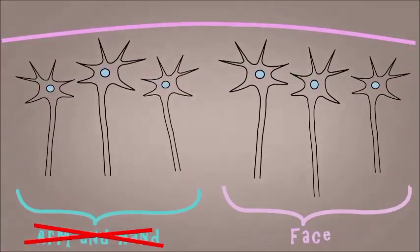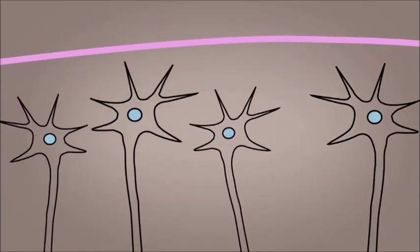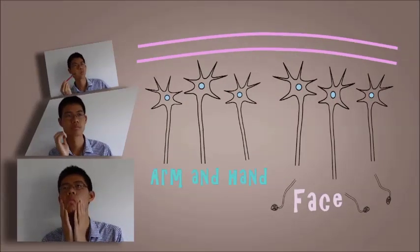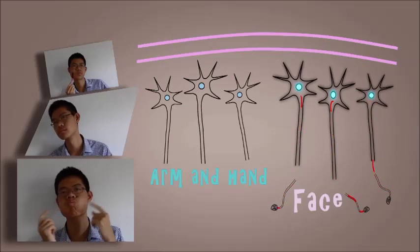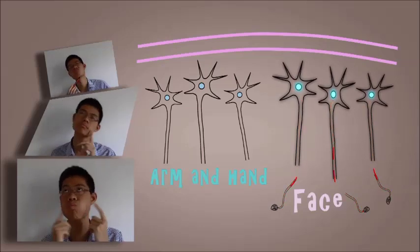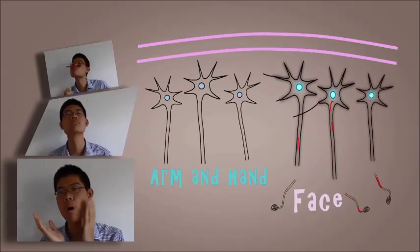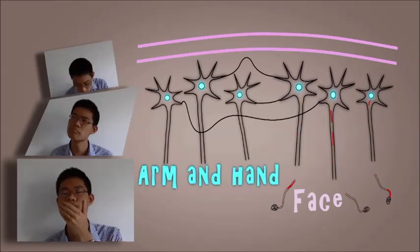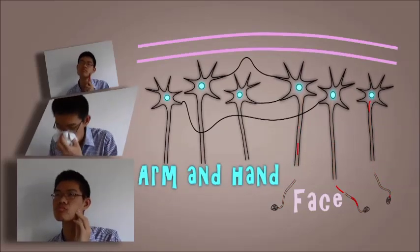For upper limb amputees, the cells in the face area get a bit greedy and hijack the unused limb cells in the cortex. This invasion occurs by making new connections. Whenever upper limb amputees touch a part of their face, which is quite a lot during any given day, not only are the cells in the face area stimulated, but the connected limb cells of the cortex are also stimulated, therefore tricking the brain into feeling phantom sensations in the amputated limb.